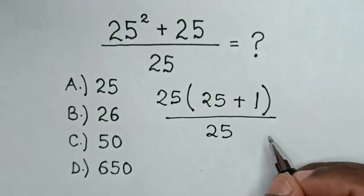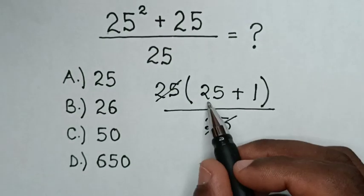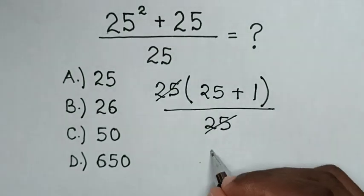Then, to simplify, this 25 will cancel with this 25. So it will be 25 plus 1 is 26.